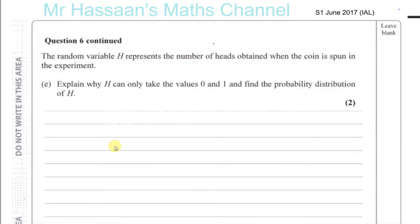Okay, now for question number six, part E. The random variable H represents the number of heads obtained when the coin is spun in the experiment. This experiment is that a coin is tossed or spun a number of times, and when a head appears the experiment is stopped — as soon as a head appears. It's spun up to four times; if a head doesn't appear in the first four throws, the experiment stops after four throws. So explain why H can only take values 0 and 1.